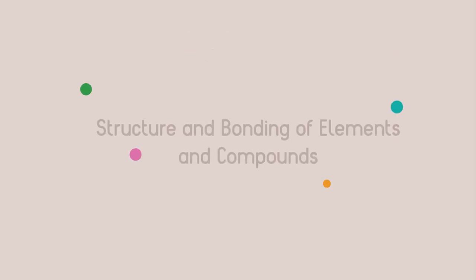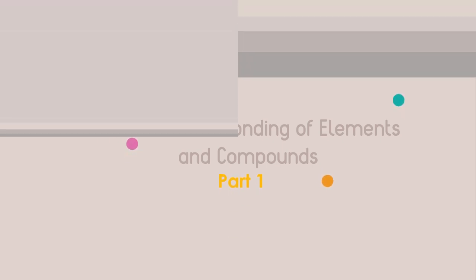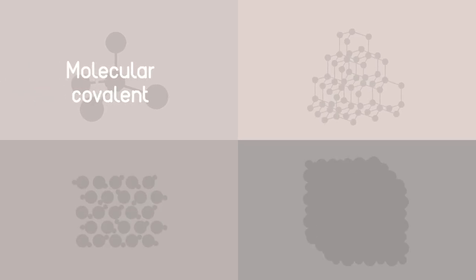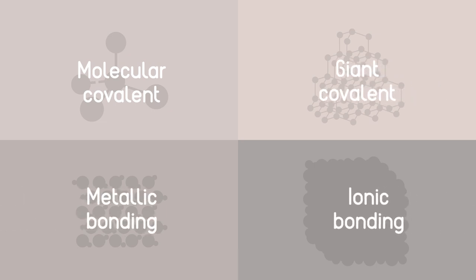Structure and bonding of elements and compounds, part one. This two-part video explains why there are only four possible structures that form when elements bond: molecular covalent, giant covalent, metallic, and ionic bonding.